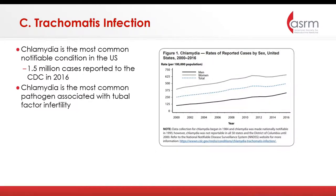Chlamydia infection is central to both clinical and subclinical pelvic infection. Chlamydia is the most common notifiable condition in the United States — in 2016, 1.5 million cases were reported to the CDC. Of the pelvic infections we think about causing tubal damage, chlamydia is the most common associated pathogen, and its rates are on the rise.